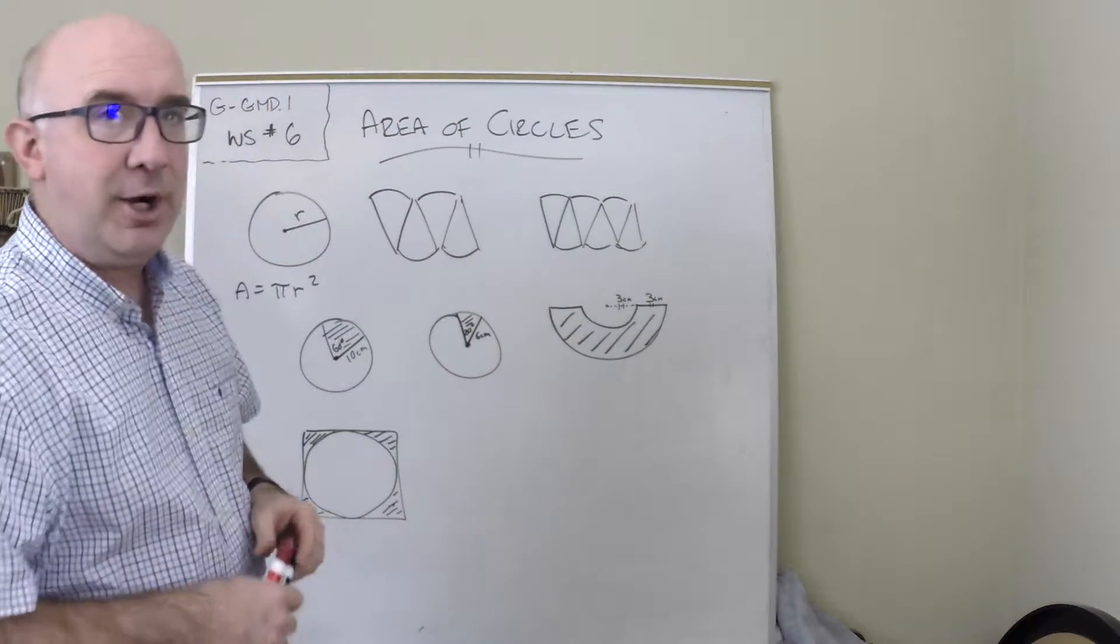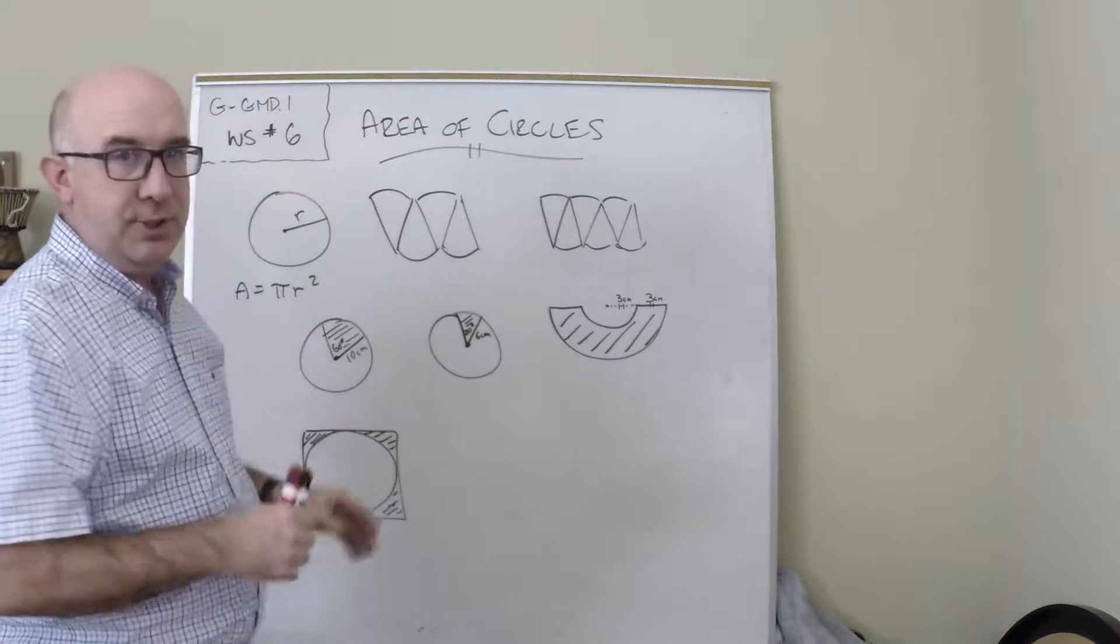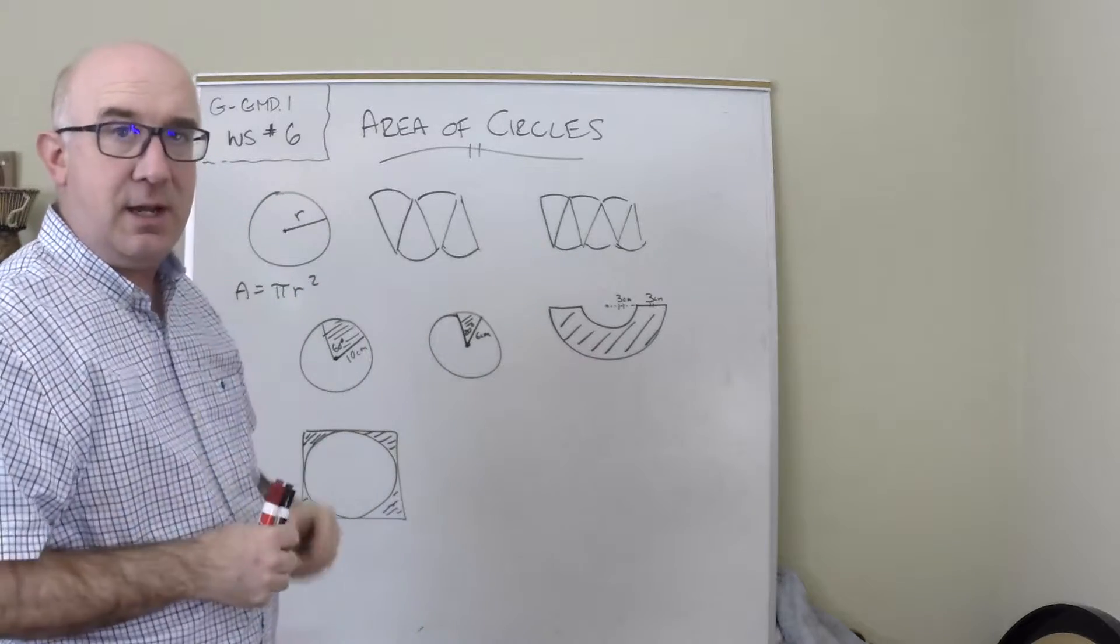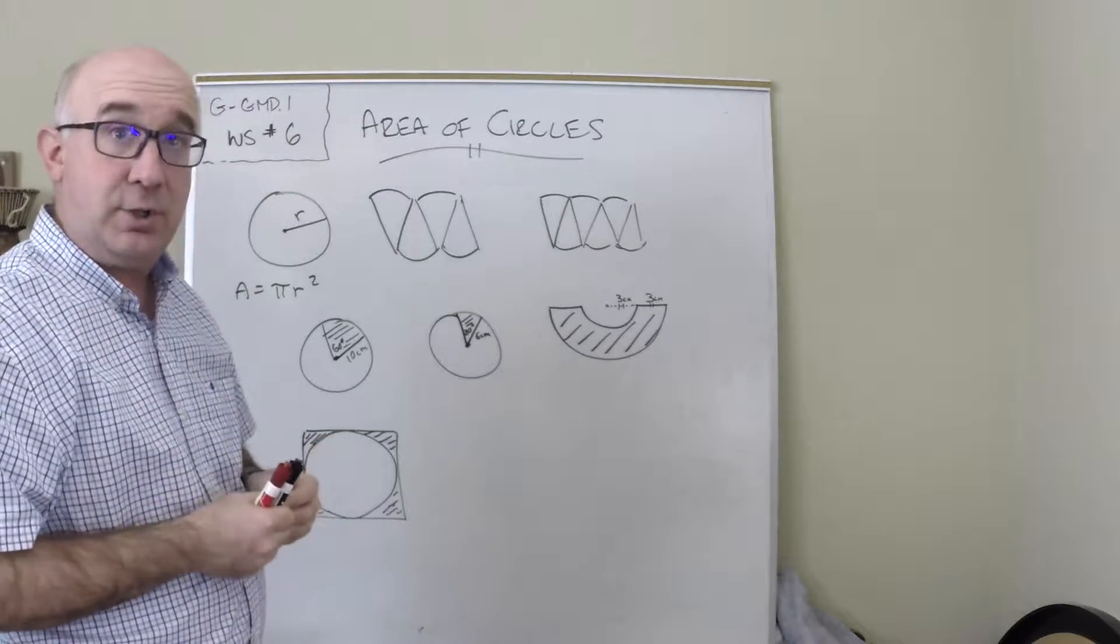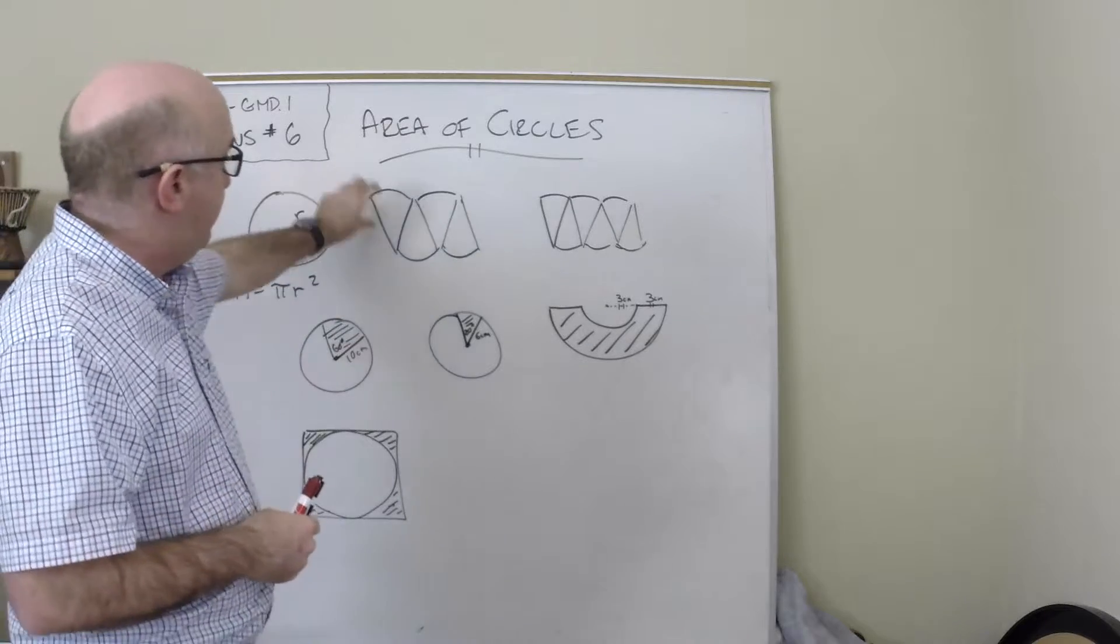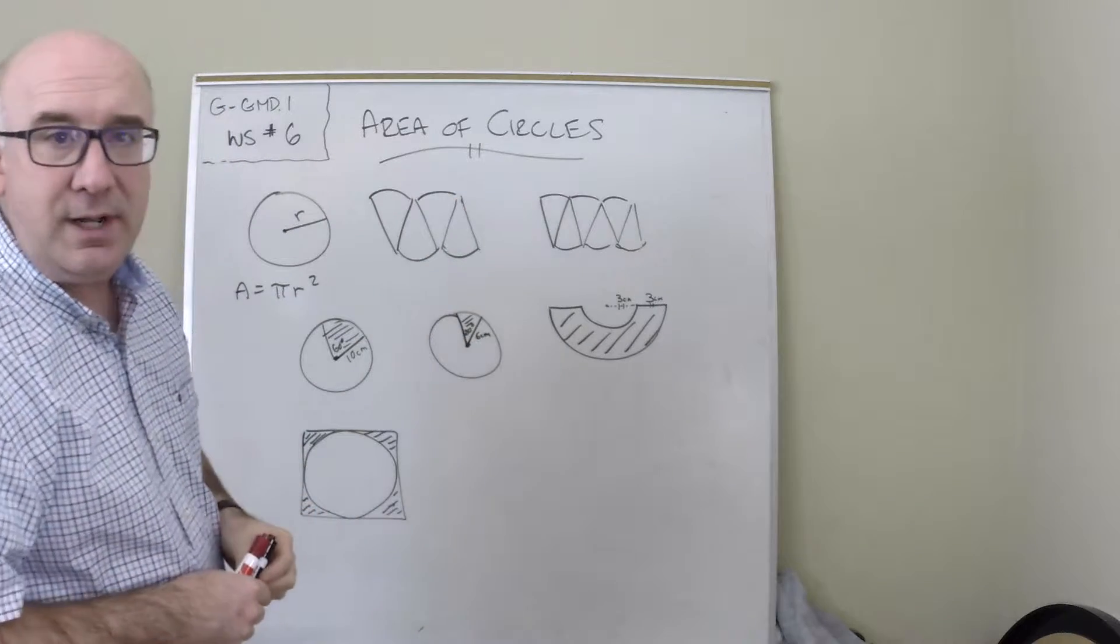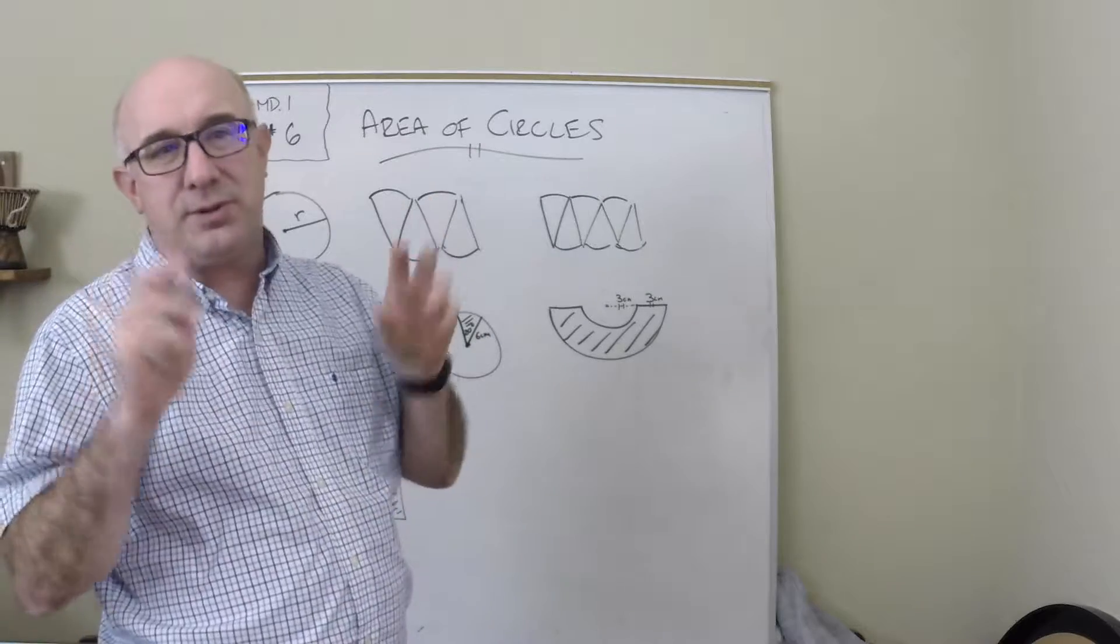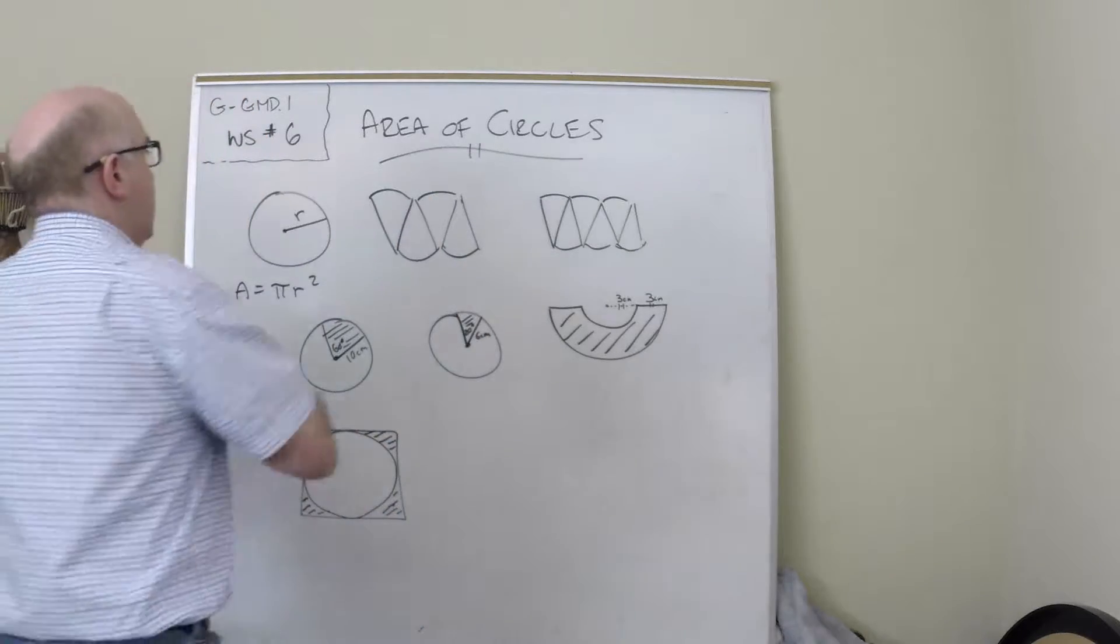One way is called a limit argument where you take a circle and you cut it into its equivalent sectors or congruent sectors and put them alternating, and what it does is it creates almost a parallelogram-like shape.